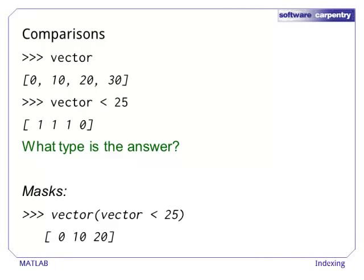Arrays can also be used in comparisons. When we use the result of a comparison in an index, we only get those values that satisfy the condition. Almost all arrays in MATLAB are of type double, which means they are floating point numbers. When a matrix is used in a comparison, the result is not a double. It is a matrix of integer zeros and ones.